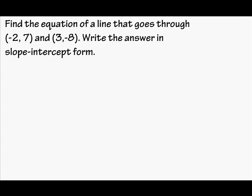Find the equation of a line that goes through (-2, 7) and (3, -8). Write the answer in slope-intercept form.